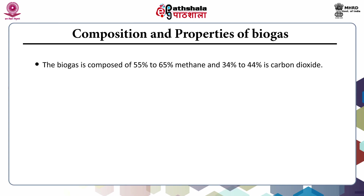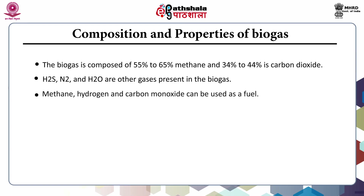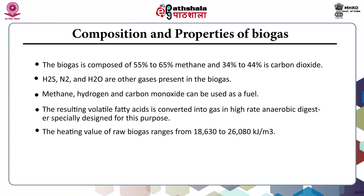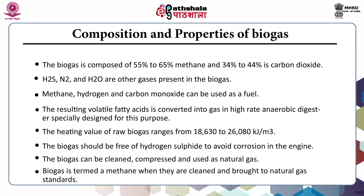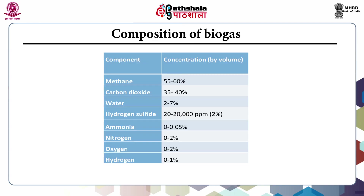Now let us discuss the composition and properties of biogas produced during anaerobic digestion of solid waste. Biogas is generally comprised of two major gases: methane, which predominates at 55 to 65%, and carbon dioxide at 34 to 44%. Trace gases include hydrogen sulphide, molecular nitrogen, and water. Methane, hydrogen, and carbon dioxide can be used as fuel. The heating value of biogas is around 18,630 to 26,080 kilojoules per cubic meter. Biogas should be free of hydrogen sulphide, otherwise it causes corrosion in engines. When biogas is compressed and cleaned to natural gas standards, it is termed biomethane.